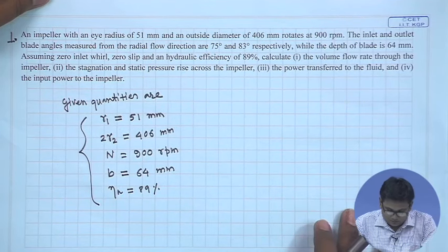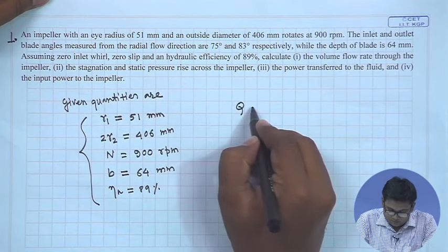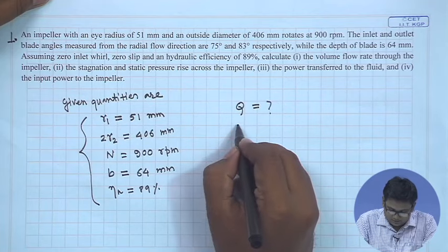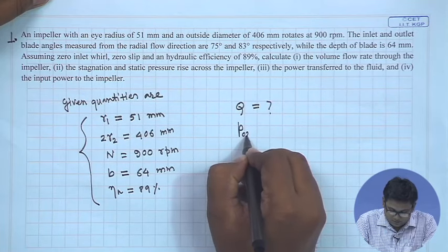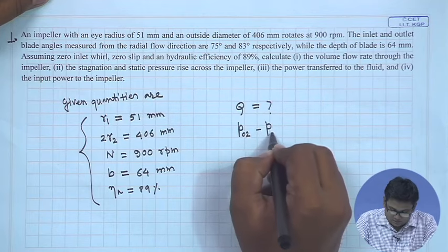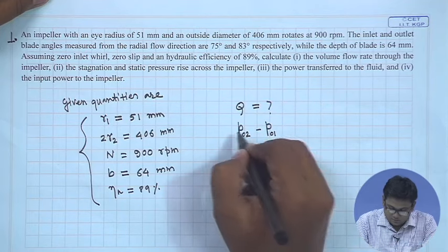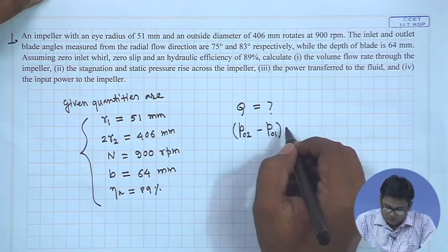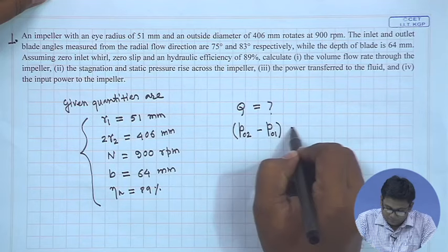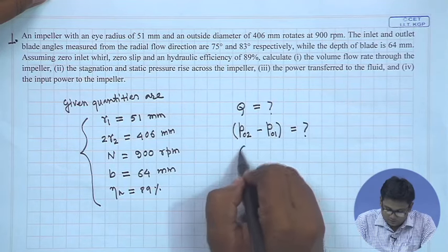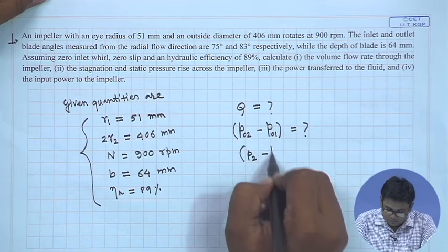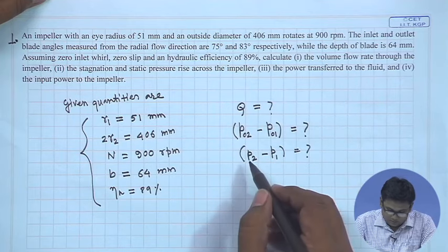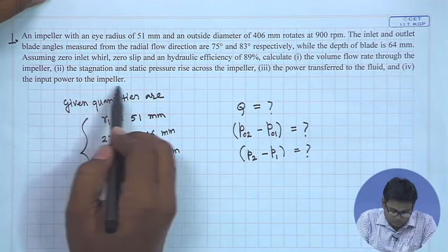We have to determine: the volume flow rate through the pump; the stagnation and static pressure rise — representing stagnation pressure at outlet as p02 and at inlet as p01, so the rise is p02 minus p01; the static pressure rise p2 minus p1; the power transfer to the fluid; and the input power to the impeller.